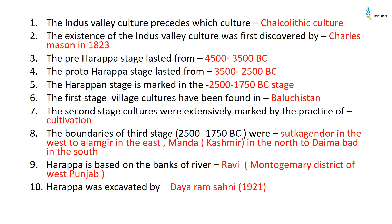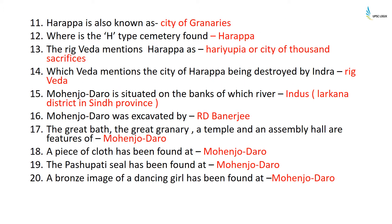Harappa is based on the banks of river Ravi and is located in Montgomery district of west Punjab. Harappa was excavated by Daiaram Sahni in the year 1921. Harappa is also known as the city of granaries. The H-type cemetery is found at Harappa. The Rig Veda mentions Harappa as Hariupia, or city of thousand sacrifices.